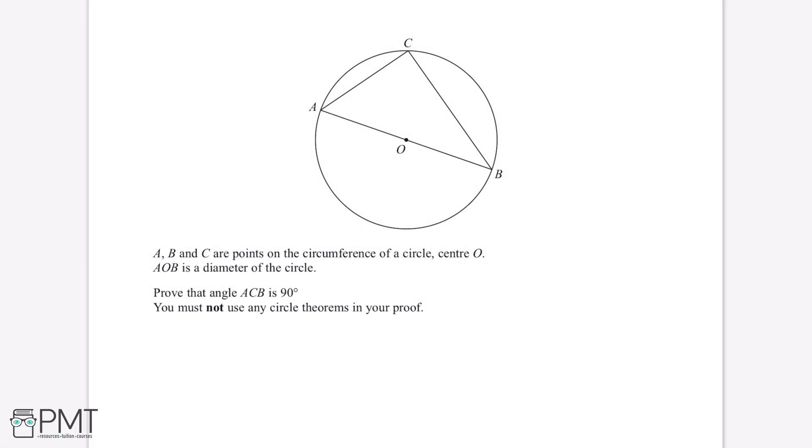A, B and C are points on the circumference of a circle, centre O. AOB is a diameter of the circle. Prove that angle ACB is 90 degrees. You must not use any circle theorems in your proof.